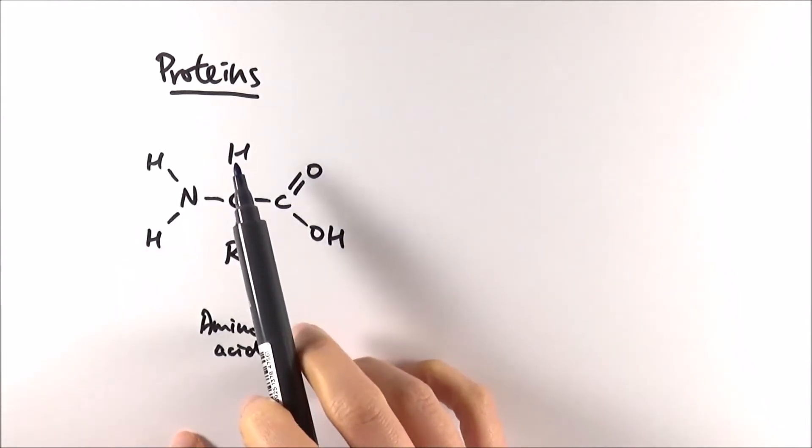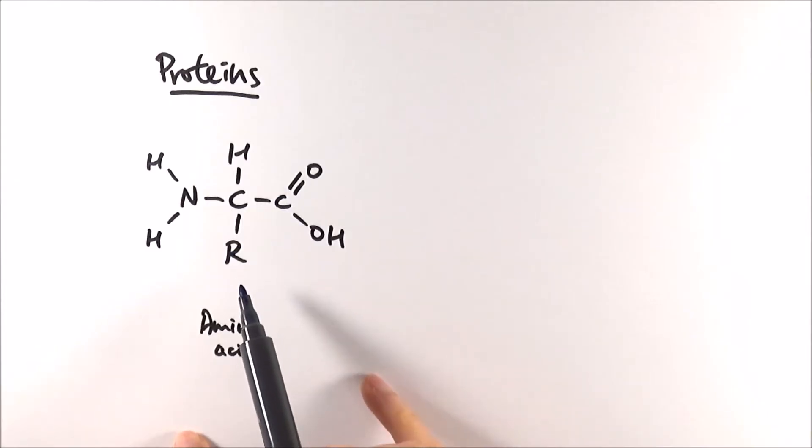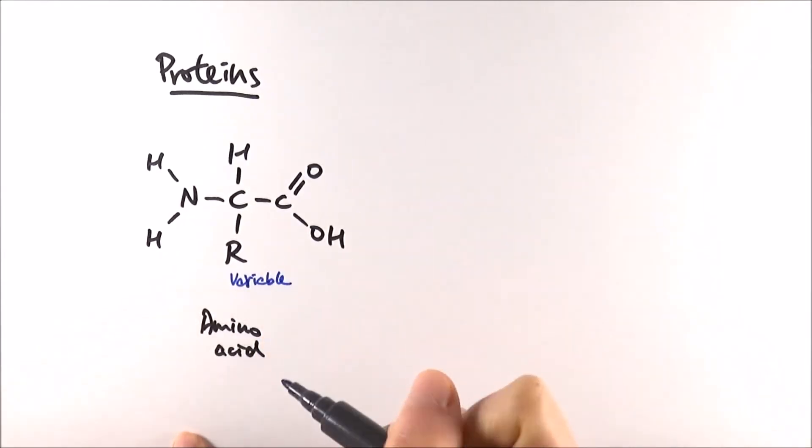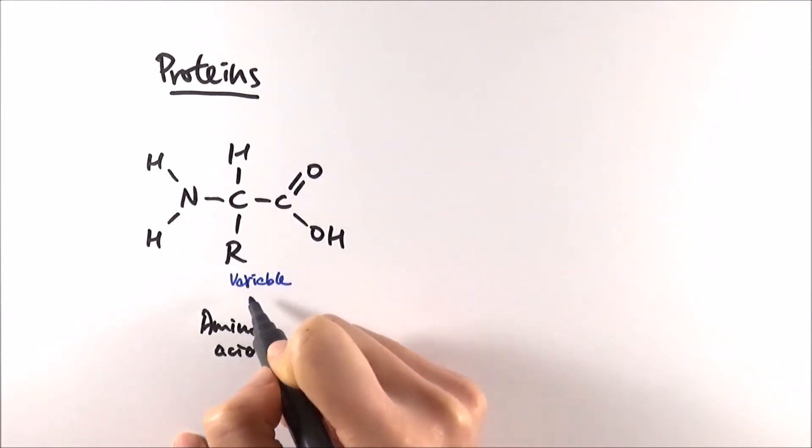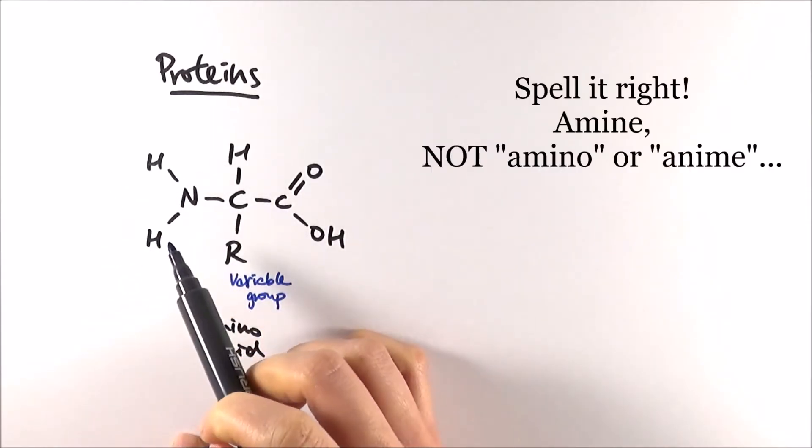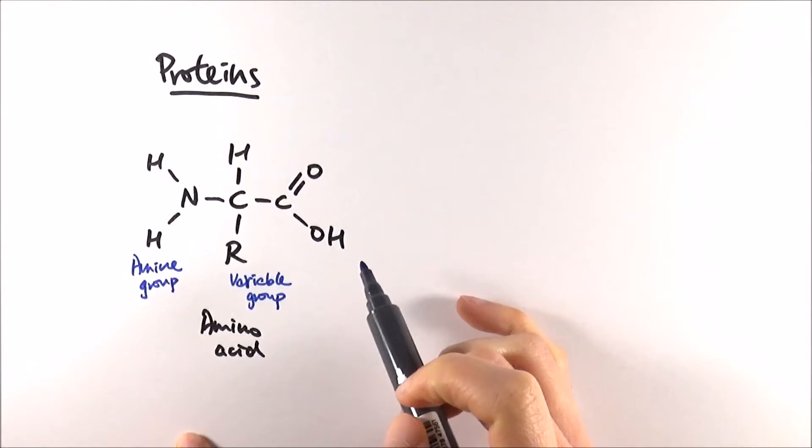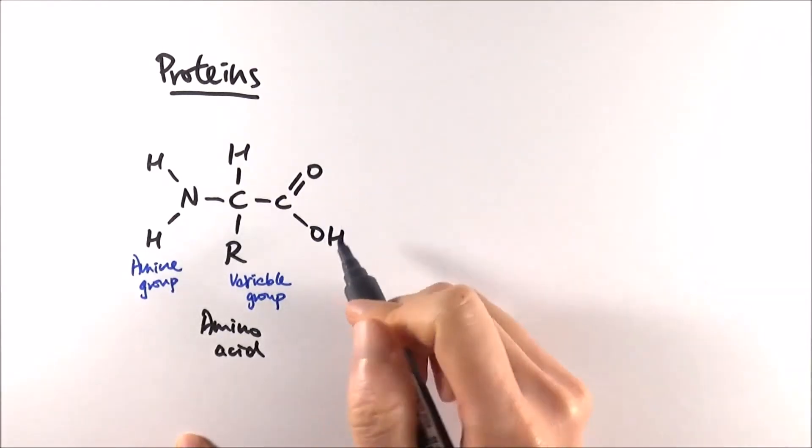We've got a central carbon, one single hydrogen, an R group which is the variable group, and this is the bit that changes depending on the 20 different types of amino acids. This part here is called the amine group, NH2, and the other side is the carboxyl group, COOH, as we've seen before.